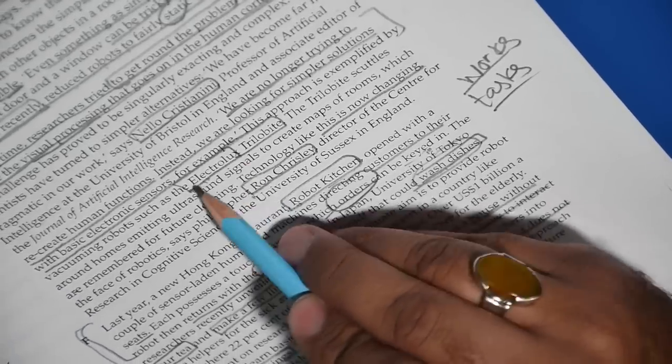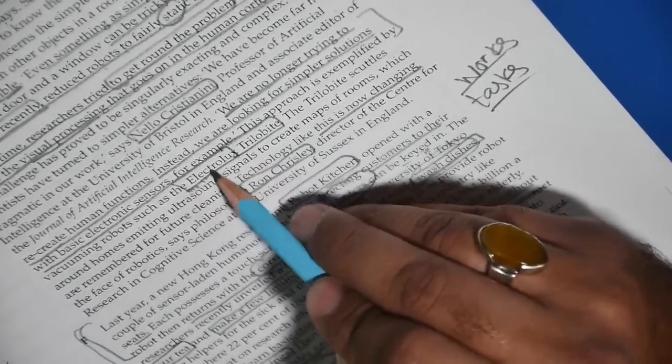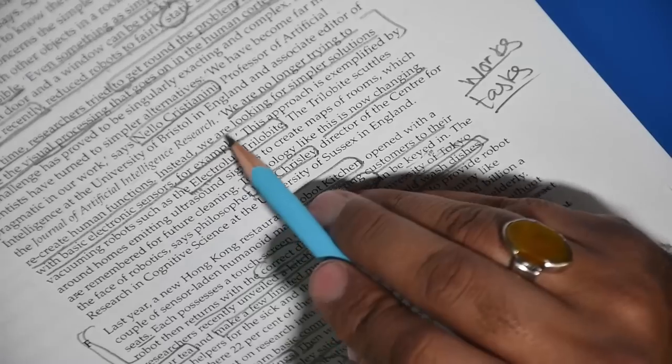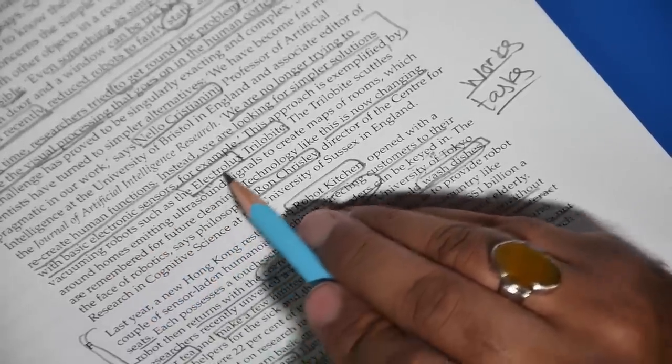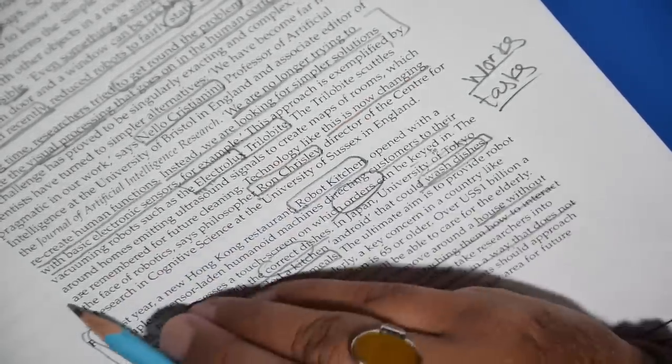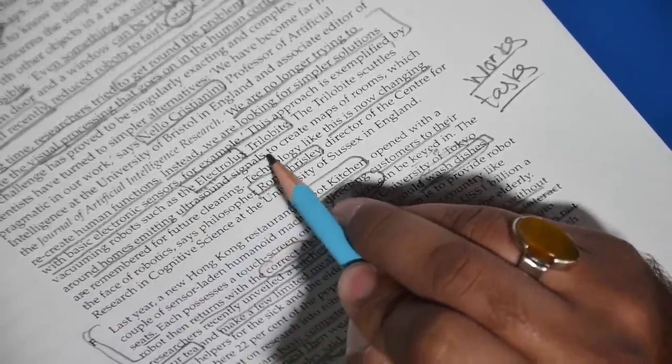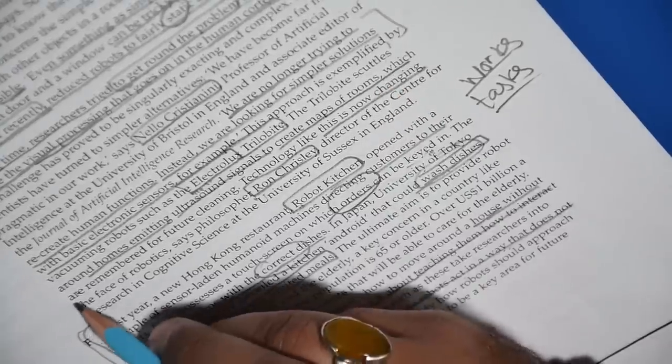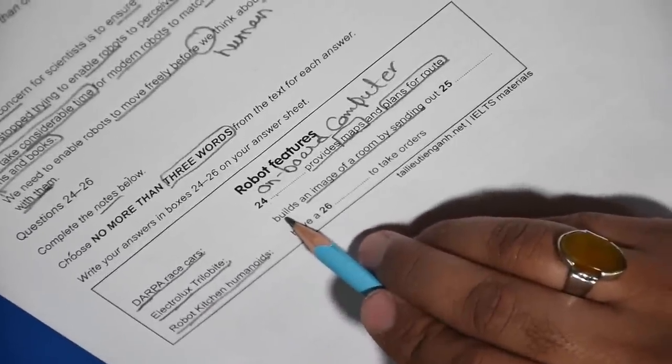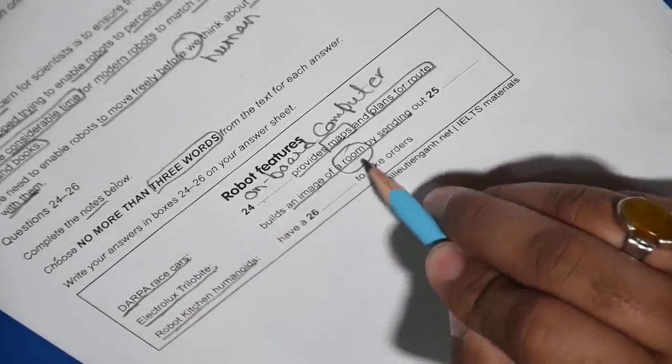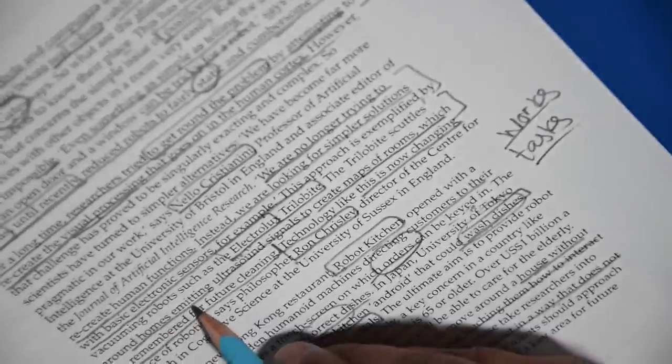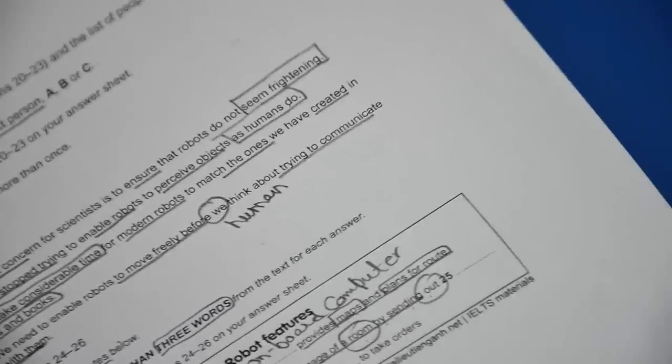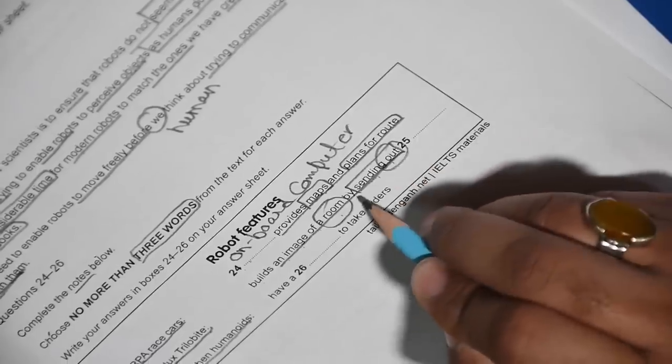Okay, it starts here. You need to go back because you know that is the end of the sentence. There's a full stop. She says we are no longer trying to recreate human functions. Instead we are looking for simple solutions with basic electronic sensors. For example, this approach is exemplified by vacuuming robots such as Electrolux trilobite. The trilobite scuttles around homes emitting ultrasound signals to create maps of rooms which are remembered for future cleaning. The answer is here somewhere. Let's read the question. Electrolux trilobite builds an image of a room, image of a room by sending out what. What is it that they send out to build the image of the room? Here they say the trilobite scuttles around homes emitting ultrasound. Emitting, emit and send out are the same words. They have the same meaning. Send out and emit.